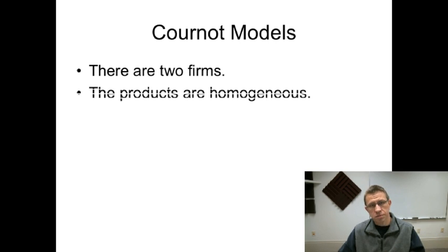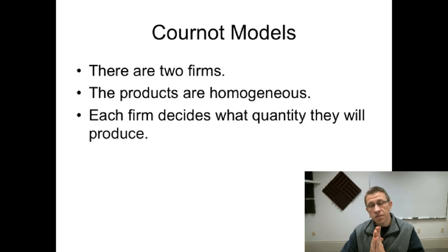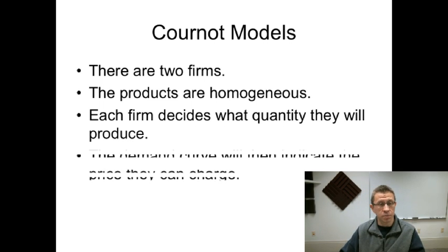The Cournot model assumes two firms selling the exact same product. The difference between the Cournot model and the Bertrand model is what we assume each firm is deciding—the firm's choice. In a Cournot model, each firm decides the quantity to produce. The firms compete by choosing a quantity, and the prices follow from the quantity. The Bertrand is actually opposite—they'll choose prices and quantities follow—but for now we'll focus on Cournot. Each firm decides what quantity they will produce.